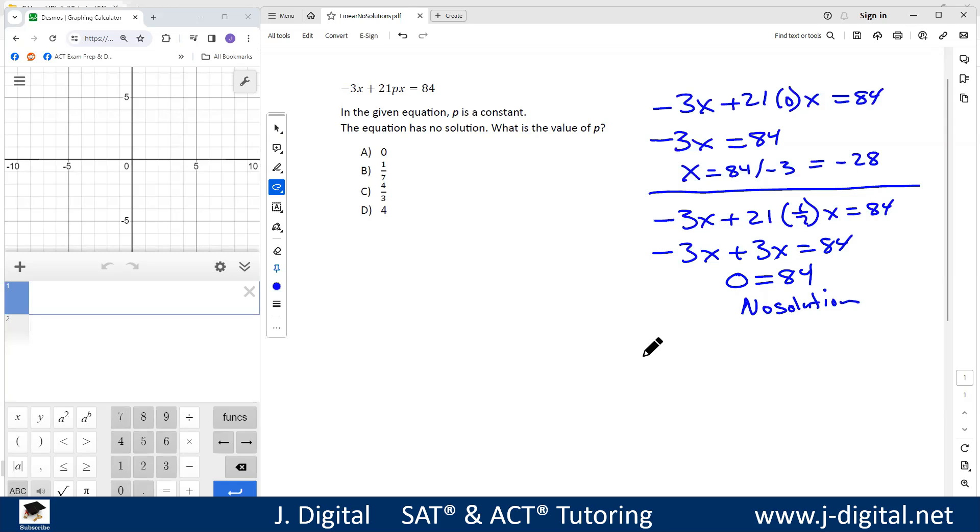If you plug in the other ones, 4/3 and 4, you get some values for those. If you do 4/3, you end up with a decimal 3.36. If you plug in 4 for p, you end up with 1.037.